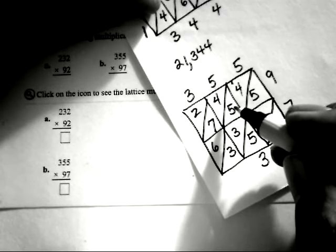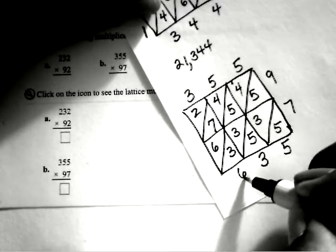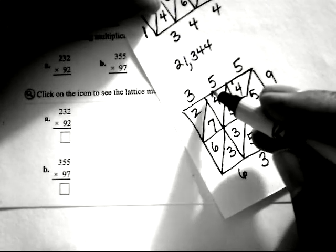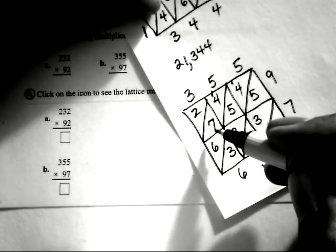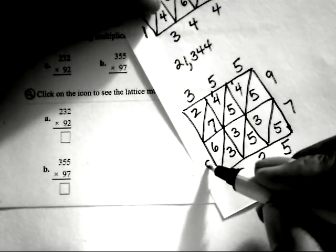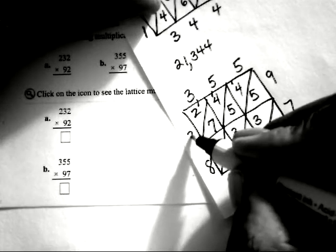1 plus 4 is 5, plus the 5 is 10, plus 3 is 13, plus 3 is 16. Write the 6 down and regroup with the 1. 1 plus that 4 is 5, plus 7 is 12. 12 plus 6 is 18. Write down the 8, regroup with the 1. And then 1 plus 2 will give me 3.